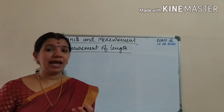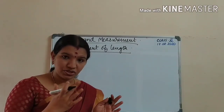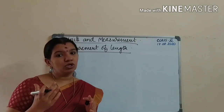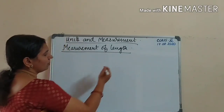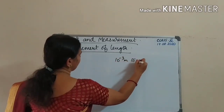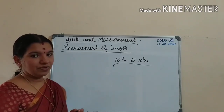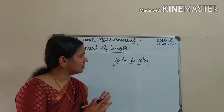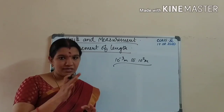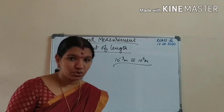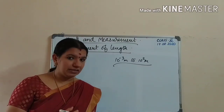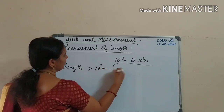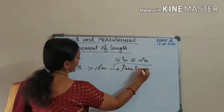For measuring the length, it can be small or it can be large. The normal range of length that we can measure is around 10⁻³ meters to 10² meters. This range we can measure with the help of a meter scale. But if the length is more than 10² meters, you have to opt for another method.